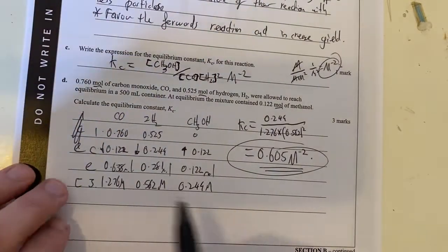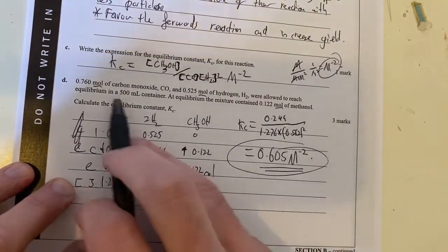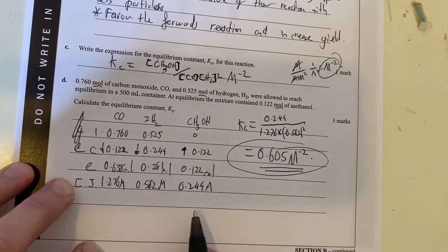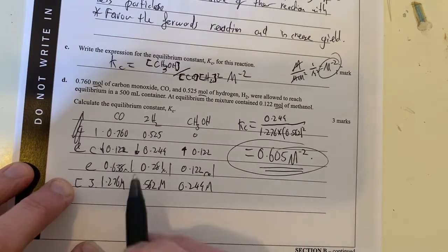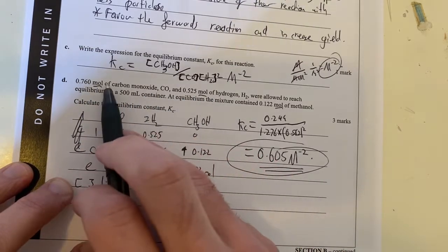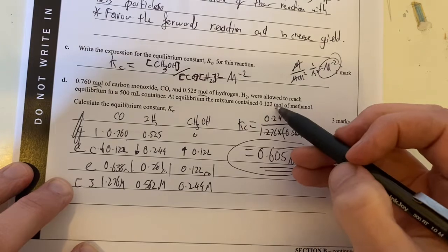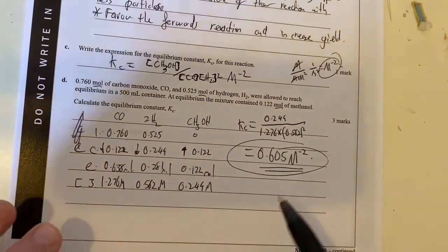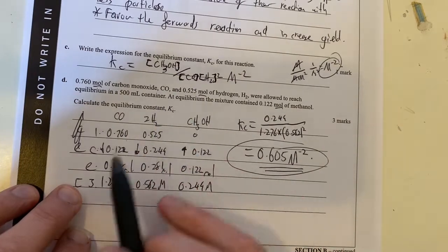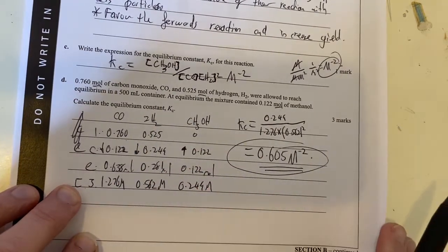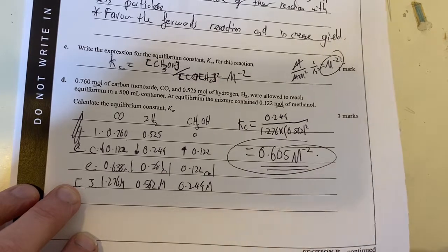Key thing here is setting up your ICE table nicely, putting your numbers in, and then working through it systematically. This is an ICE question because we're starting off with an initial amount of stuff. We're allowing that to change and reach equilibrium. So therefore, we have an initial change equilibrium. Pressure point, again, is making sure that we convert this into concentration, and then check your significant figures because this is a classic question of trying to work out the right significant figures.